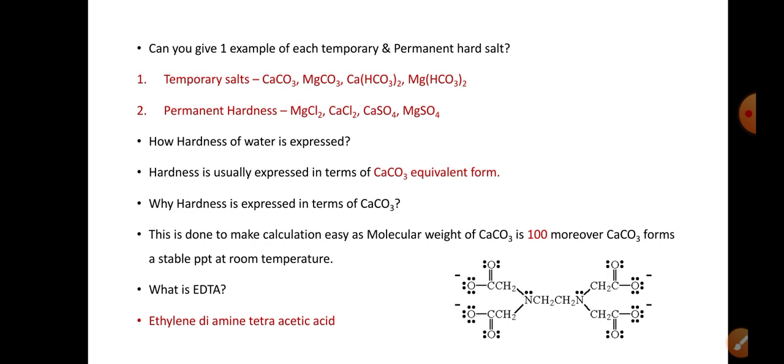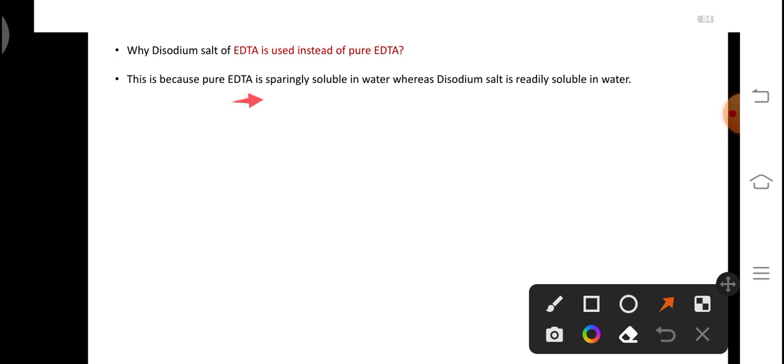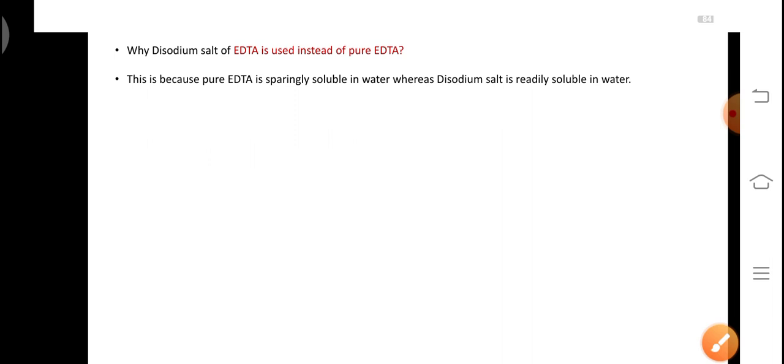Total there are six sites through which the cations can be grabbed. EDTA forms a very stable complex. But during the titration, instead of pure EDTA, we use disodium salt of EDTA. Why? This is because EDTA is sparingly soluble in water, so it has a limited solubility. By using disodium salt, the solubility of EDTA is increased since disodium salt of EDTA is readily soluble in water.